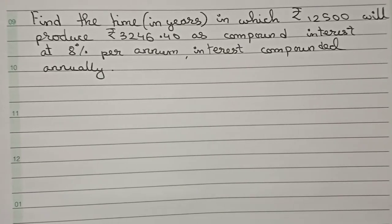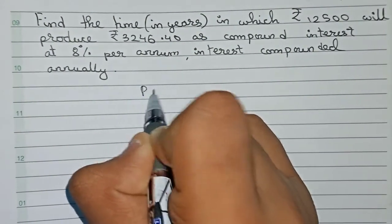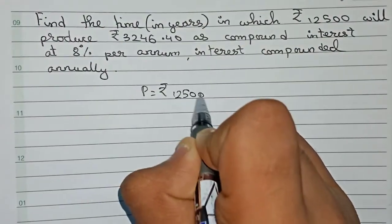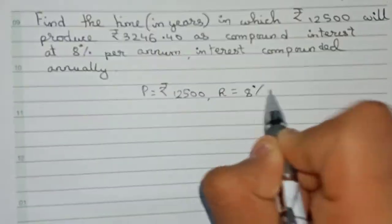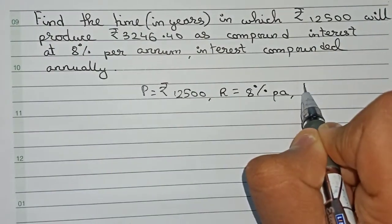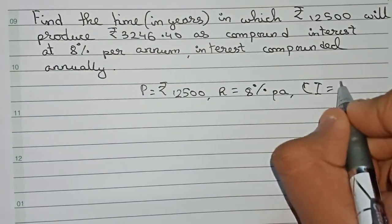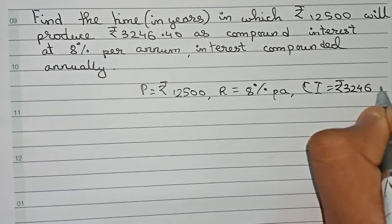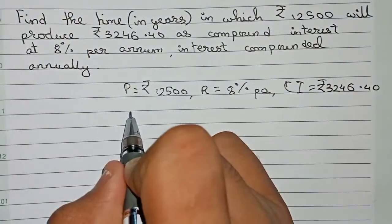To solve this, first get all the information that has been given. The principal is 12500 rupees, the rate of interest is 8% per annum, and the CI is also given as 3246.40 rupees. We have to find the time.